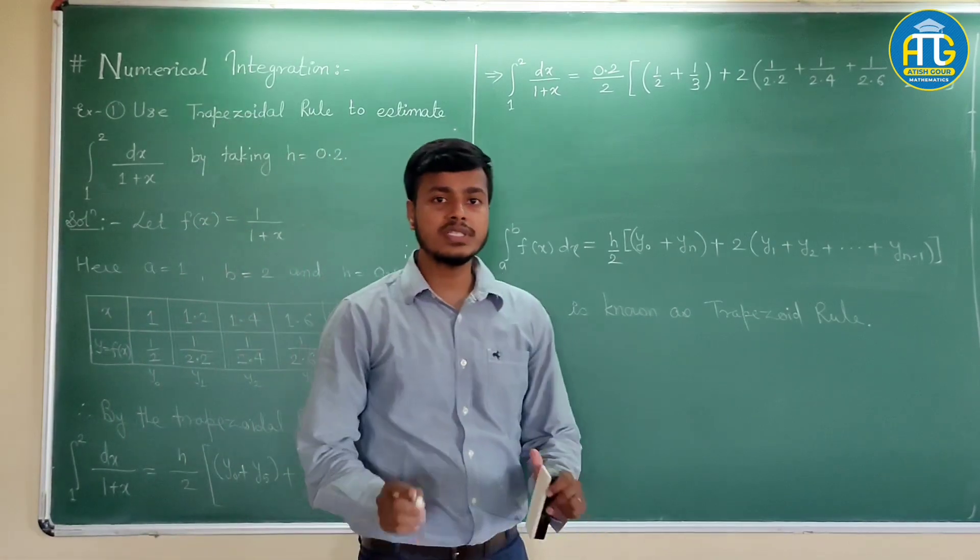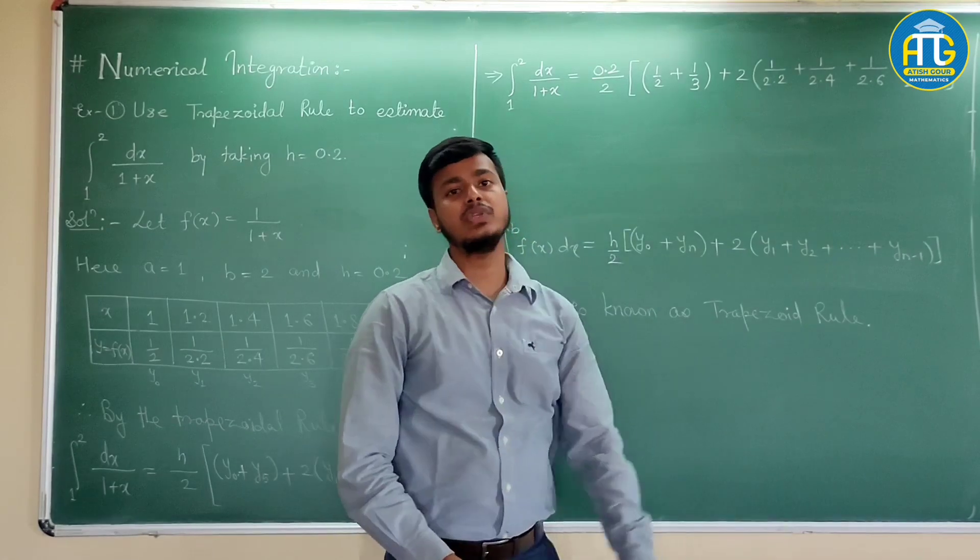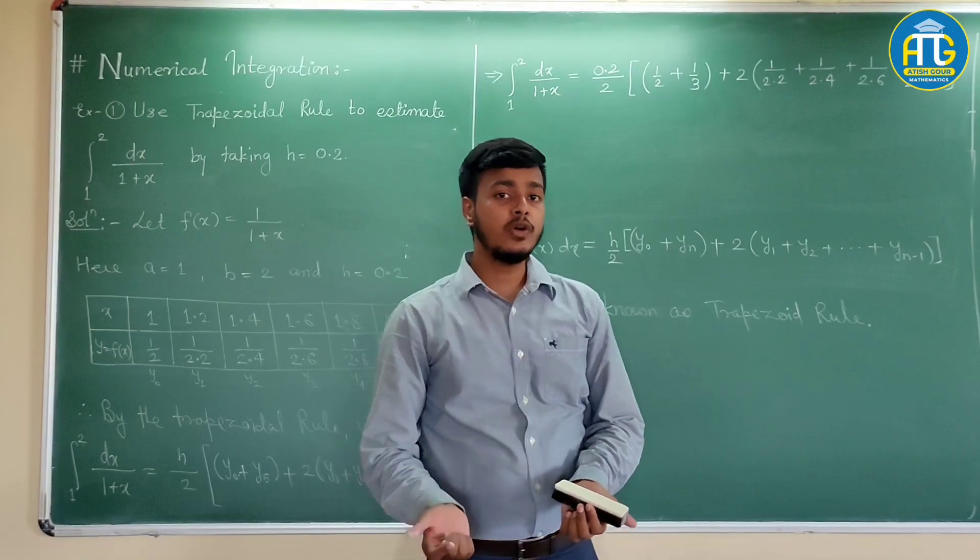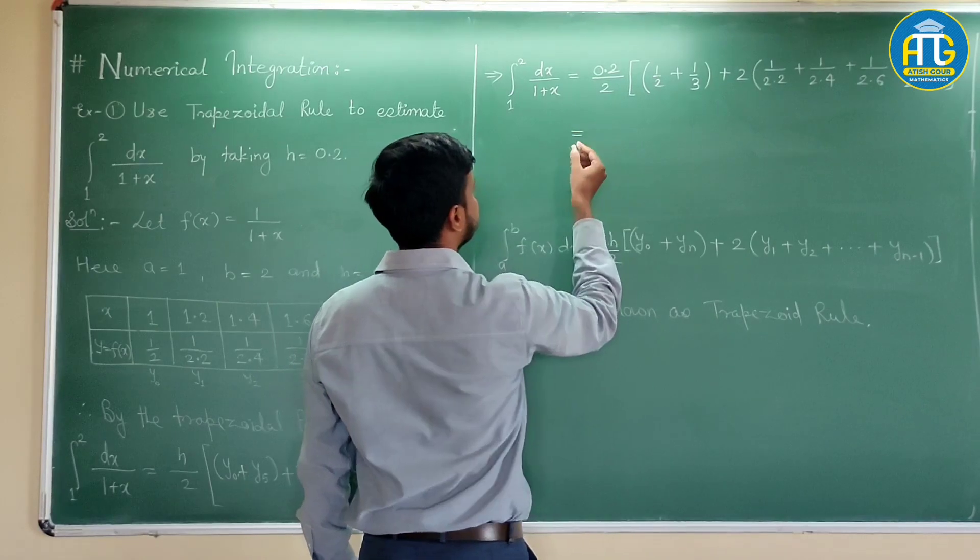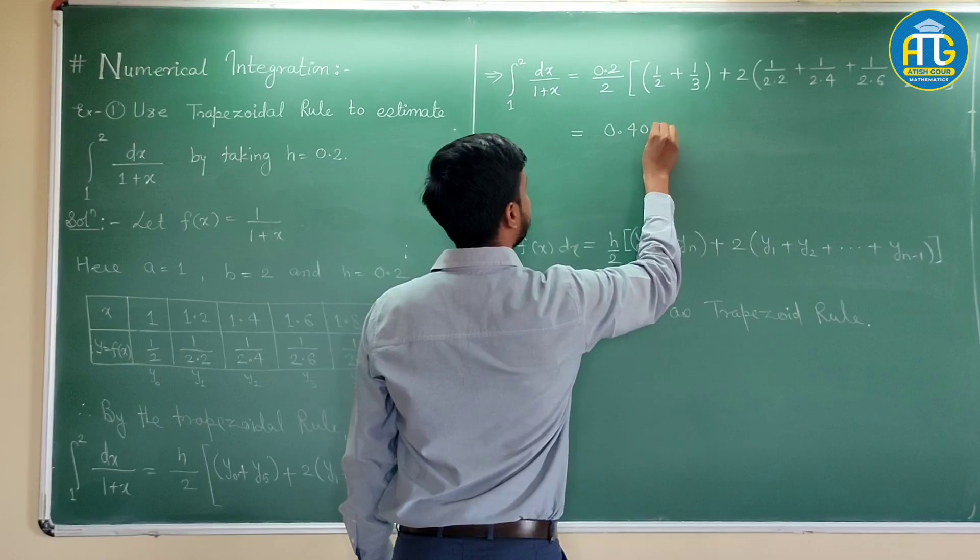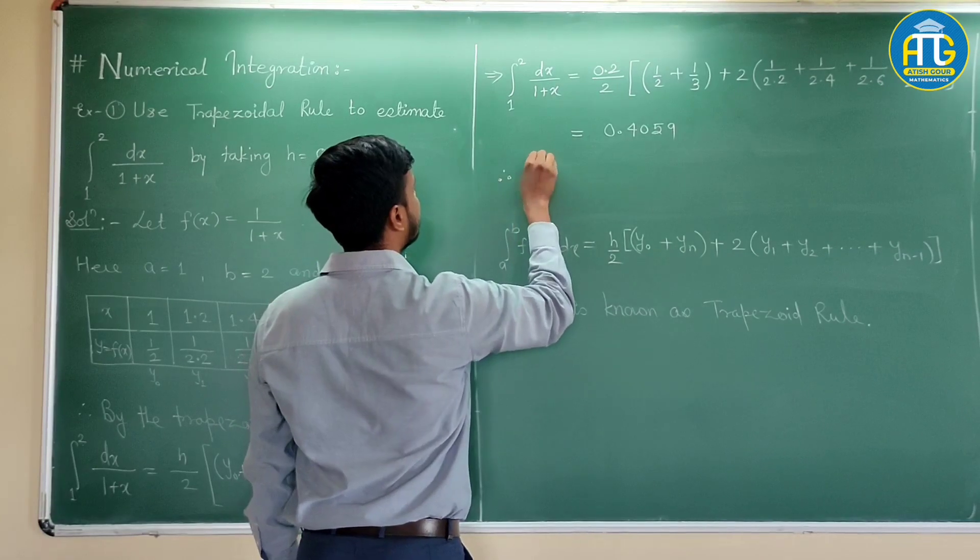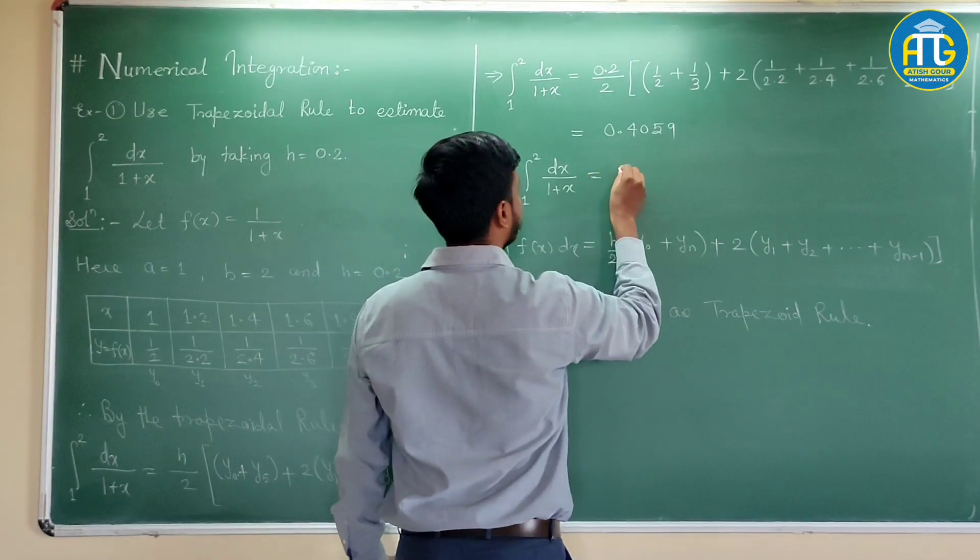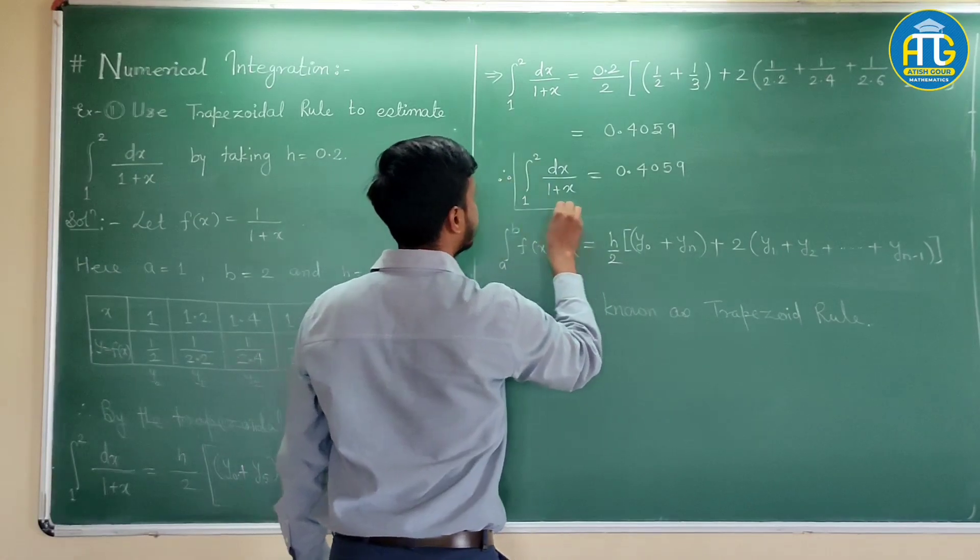Now, I want you to pause the video for few seconds. Do all these calculations and come up with your answer. Resume the video. I hope you might have got the answer of this. What answer you are getting? I am getting the answer to be 0.4059. Therefore, the numerical integration of this dx upon 1 plus x is 0.4059. And this is nothing but the answer.